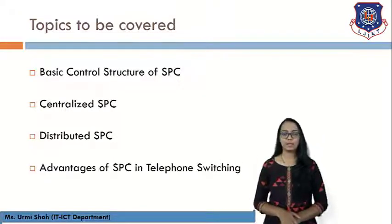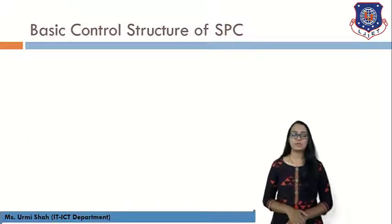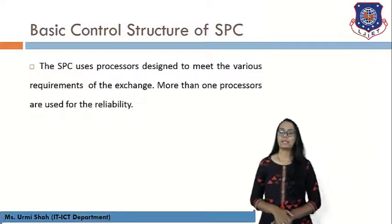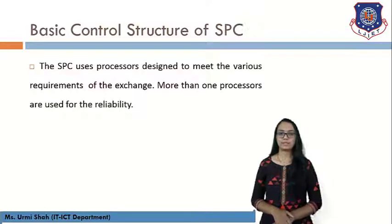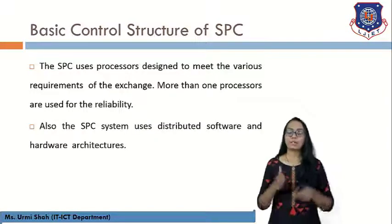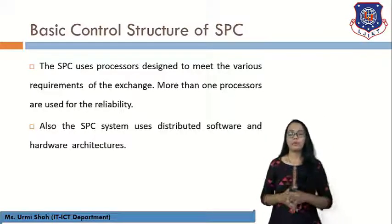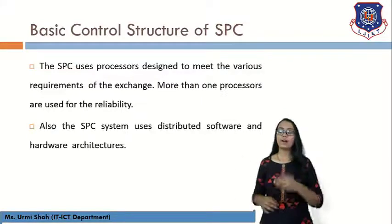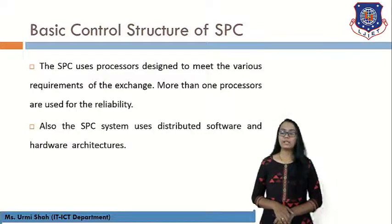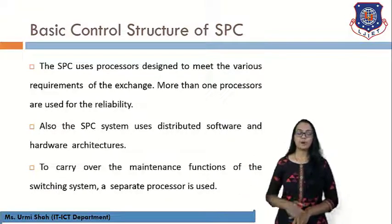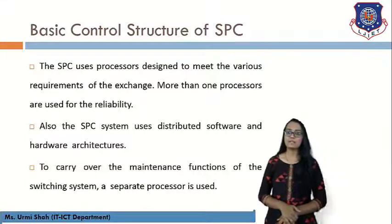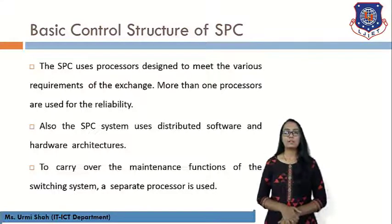The first topic is the basic control structure of SPC. SPC uses processors designed to meet the various requirements of the exchange. More than one processor is used for reliability. SPC requires a processor that stores all programs or instructions to be executed one after another. The SPC system also uses distributed software and hardware architectures to carry out maintenance functions, and a separate processor is used for that.